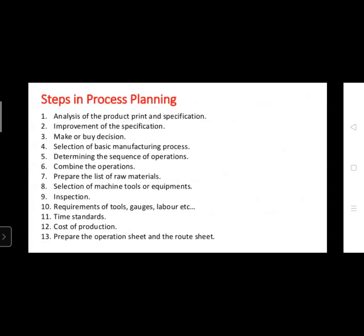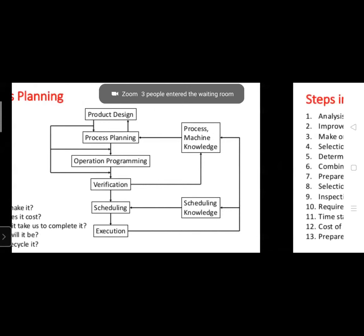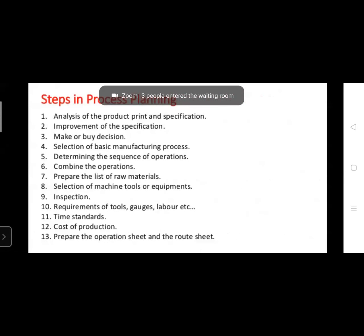The steps in process planning are: 1) Analysis of product print and specification, 2) Improvement of specification, 3) Make or buy decision, 4) Selection of basic manufacturing process, 5) Determining the sequence of operations, 6) Combine the operations, 7) Prepare list of raw materials, 8) Selection of machine tools/equipment, 9) Inspection, 10) Requirements of tools, gauges, labour, etc., 11) Time standards, 12) Cost of production, 13) Prepare the operation sheet and route sheet.